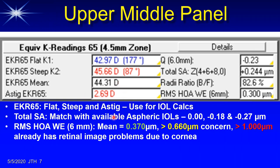The panel also shows the Q value, normally minus 0.26, representing corneal shape. More importantly, the total spherical aberration — which is not just the Zernike 4-0 term, but the sum of the 4th, 6th, and 8th order terms. The normal in the human population is 0.27 microns. You use this to select the appropriate aspheric IOL. Aspheric lenses come in 0 from B&L, minus 0.18 from Alcon, and minus 0.27 from J&J, to eliminate spherical aberration.